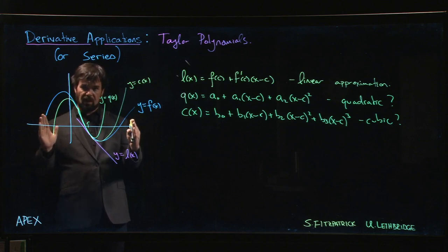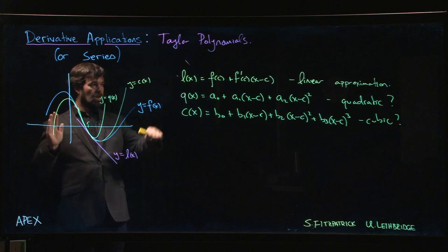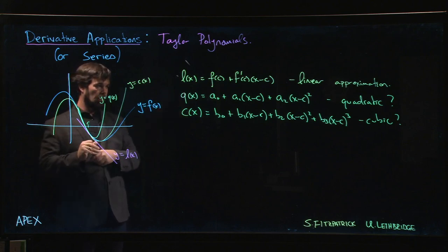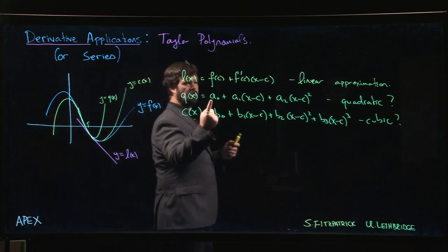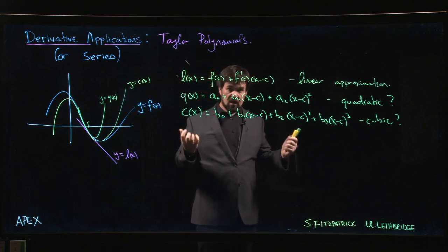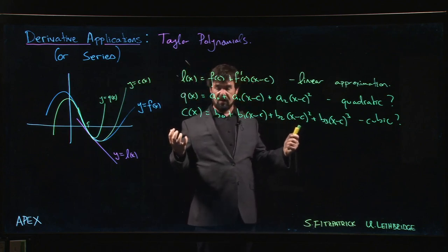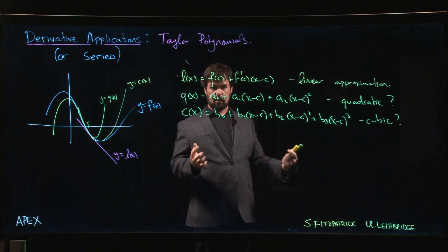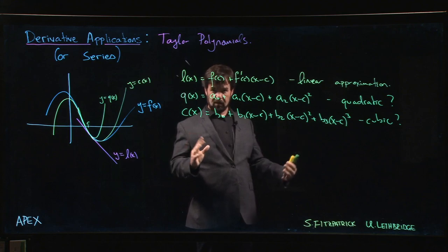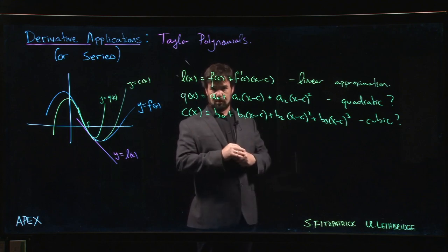In the next video we'll play around with this. We'll talk about how you decide what these coefficients should be, how we get things so that it's a good fit. Once we play around with that, we're going to arrive at the formula for the coefficients in what's called a Taylor polynomial. Then we'll be able to look at some examples.